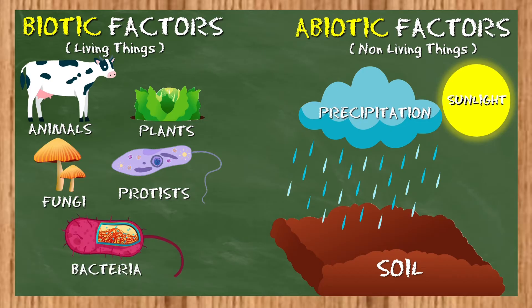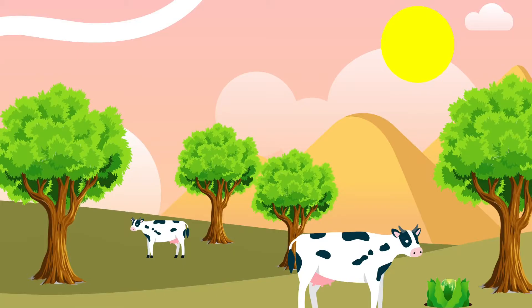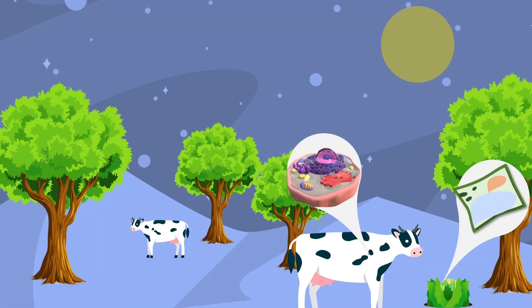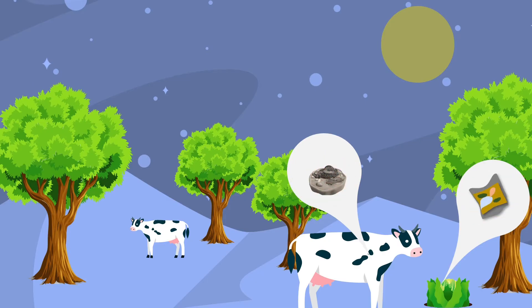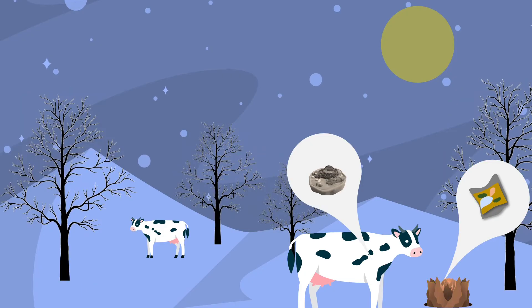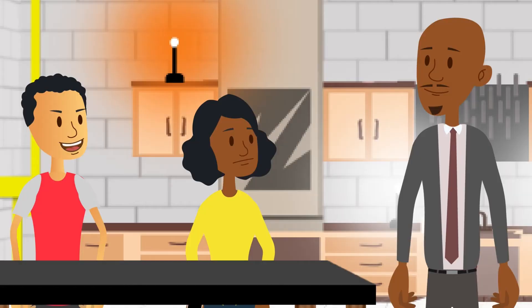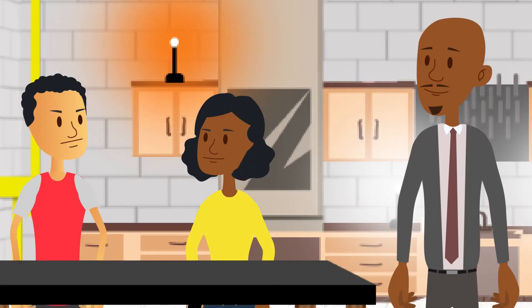People always forget those. Abiotic factors affect our ability to process energy, which affects our cells, and our cells help control how we respond to the environment, which could interrupt how we maintain a stable internal environment, which can affect how we grow and develop. And if we fail to grow and develop, we won't be able to reproduce. Okay, you proved your point.